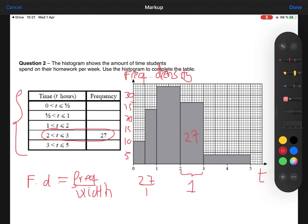The first bar goes from 0 to 0.5. So that bit there. The height is 10 and the width is 0.5. So the area is base times height, 0.5 times 10 is 5. If the area is 5, that means the frequency is 5, because frequency and area are the same. So there were 5 people that took between 0 and 0.5.